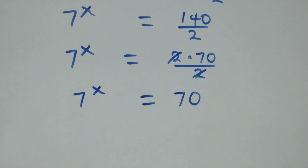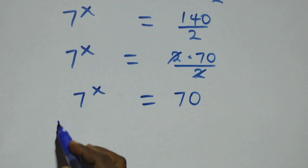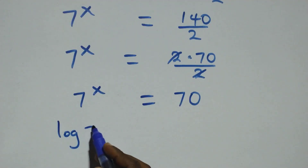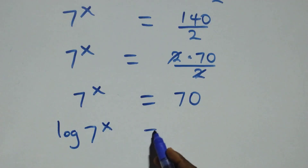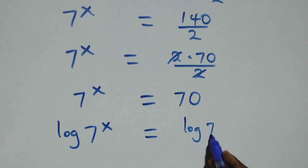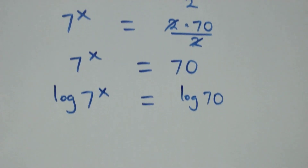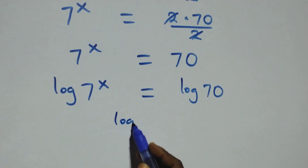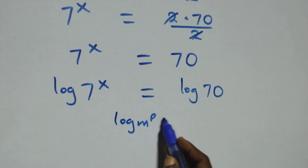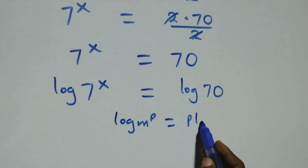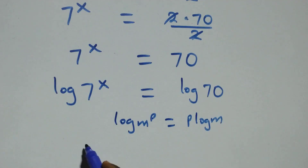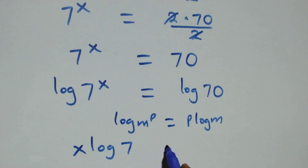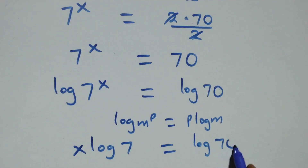Then the next step: we take the log on both sides. We have log of 7 raised to power x equals log 70. We apply the power rule of logarithms: when we have log n raised to power p, this is the same as p times log n. So we have x times log 7 equals log 70.